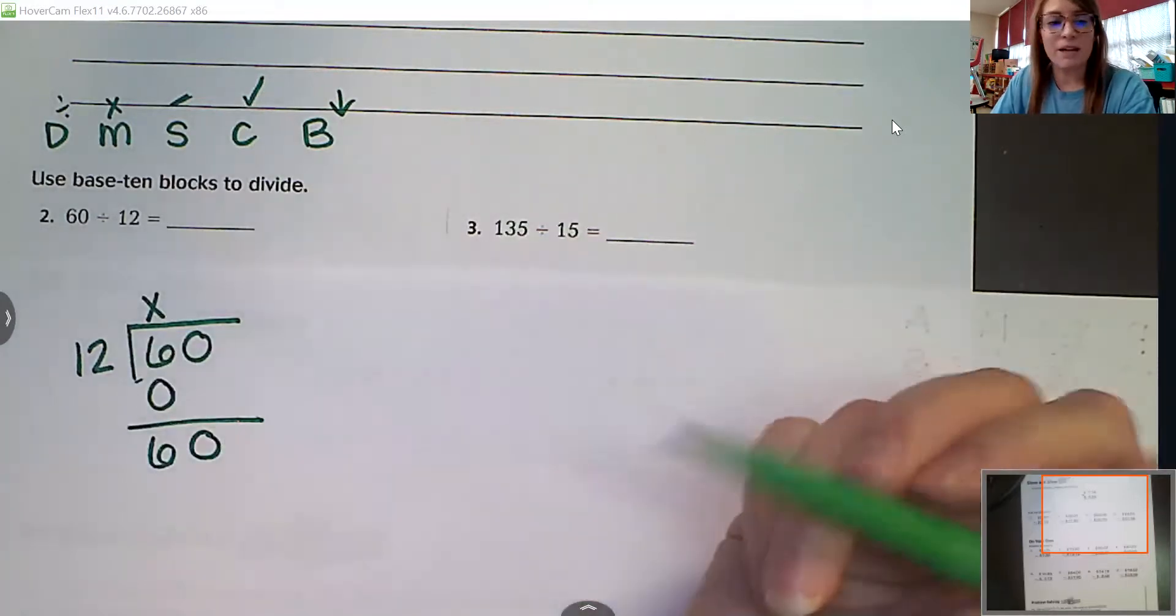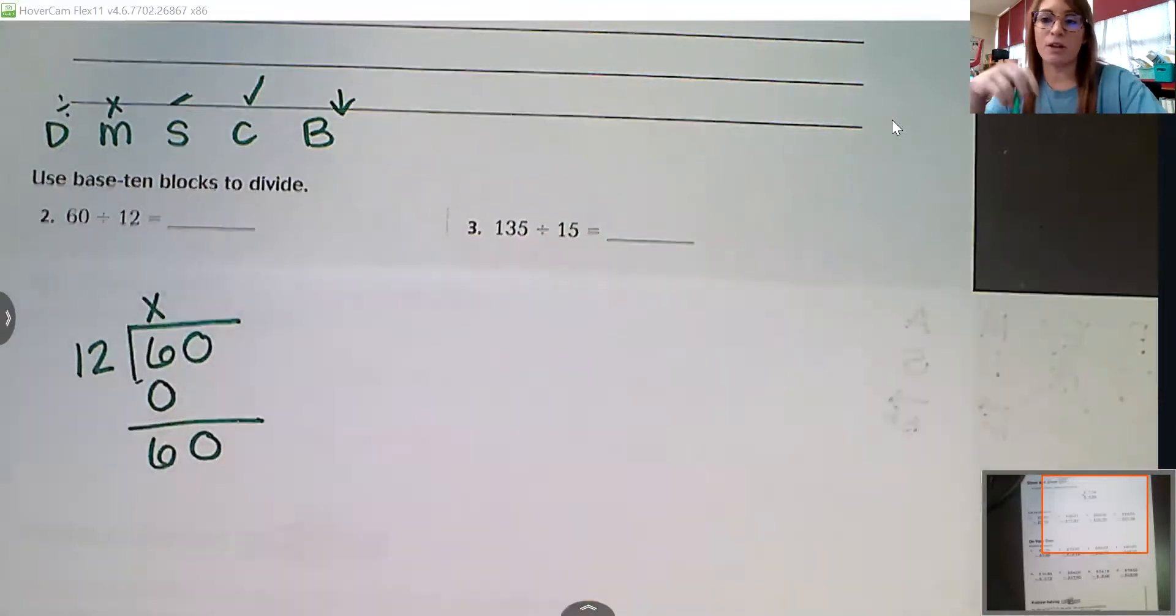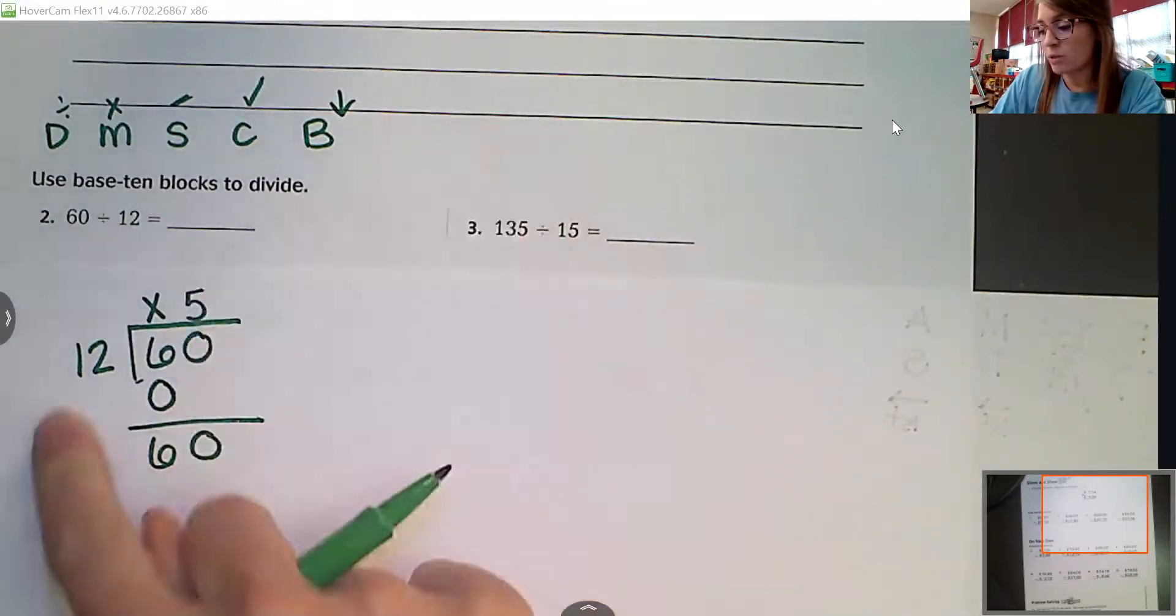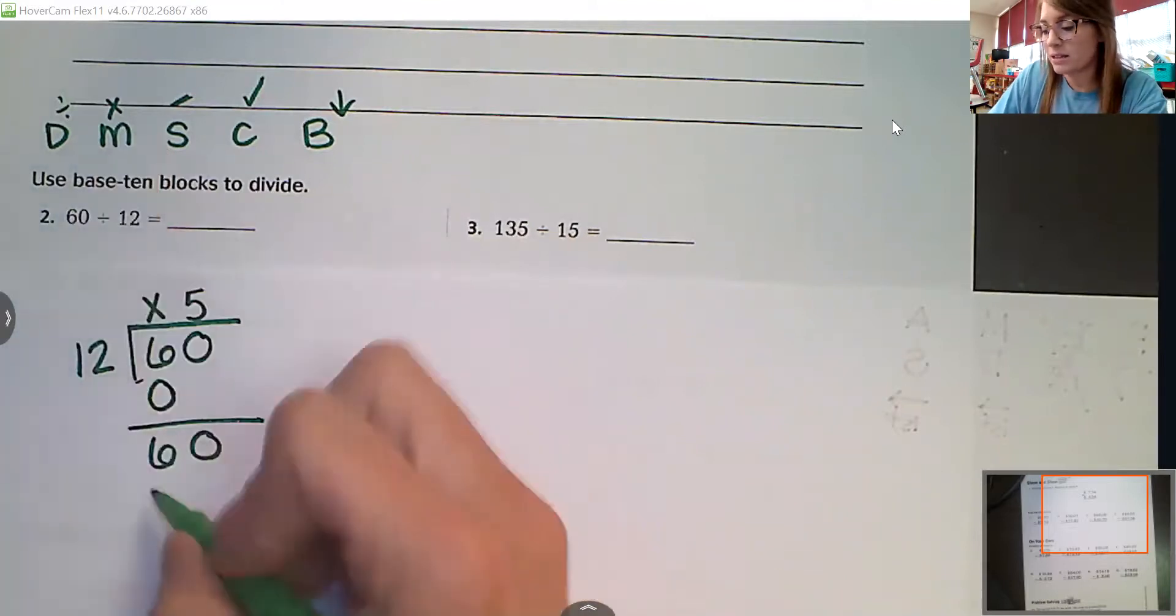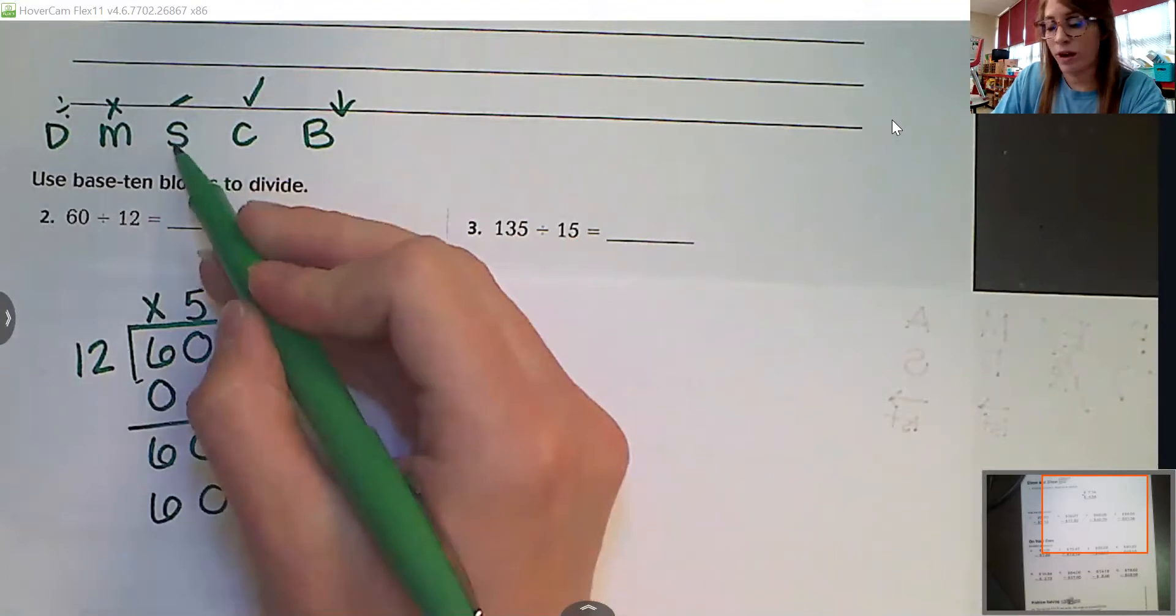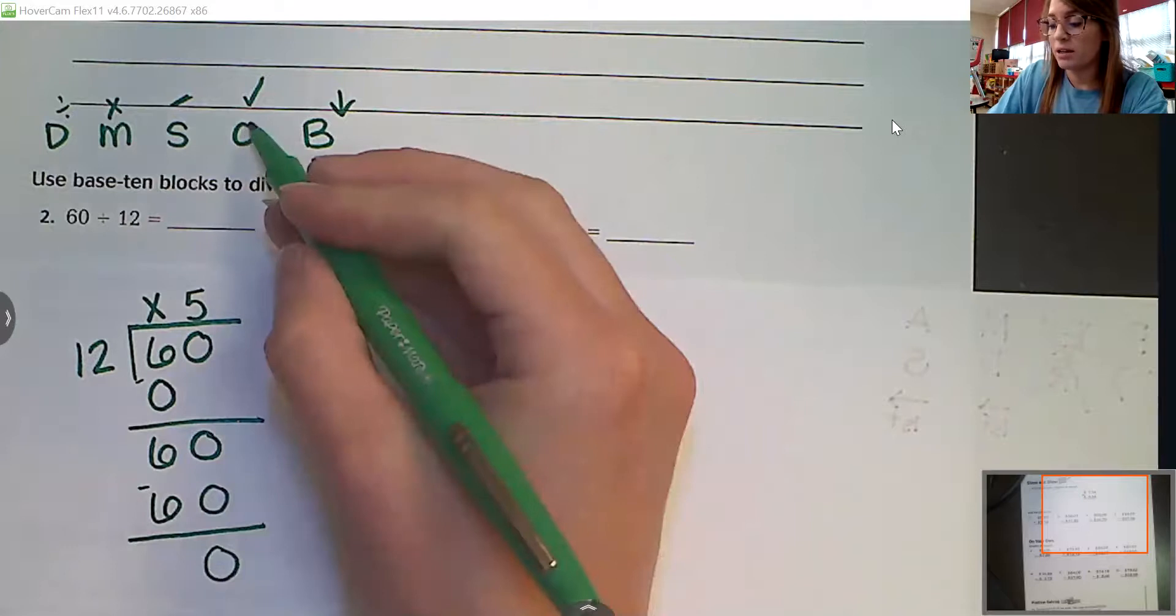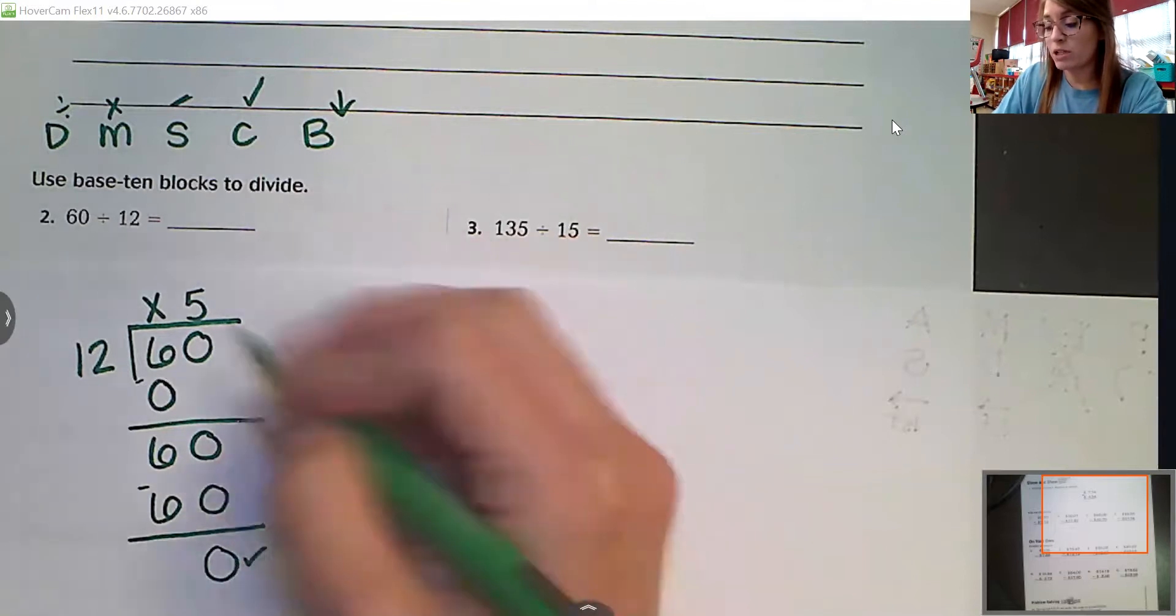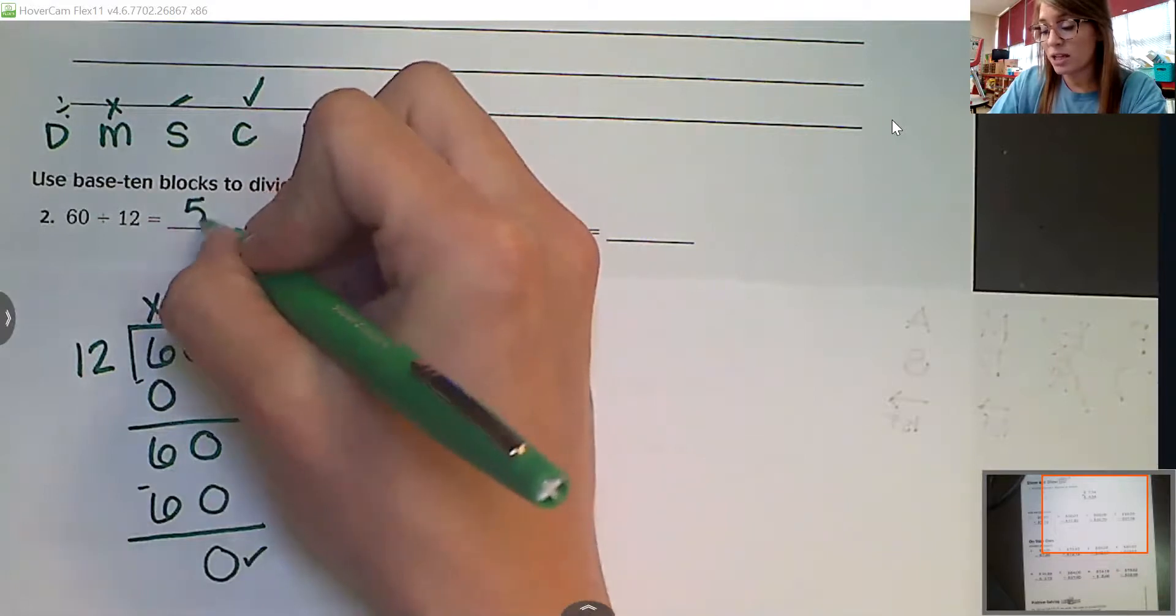Can 12 go into 60? Yes. How many times can 12 go into 60? That's one of those you got to know your facts things. 12 times what will give me 60? Five, very good. So I'm going to put that five up top. 12 multiplied by five is 60. Then we subtract. 60 minus 60 is zero. We check to make sure that zero is less than this number, and it is. Nothing left to bring down, which means that 60 divided by 12 is just five.